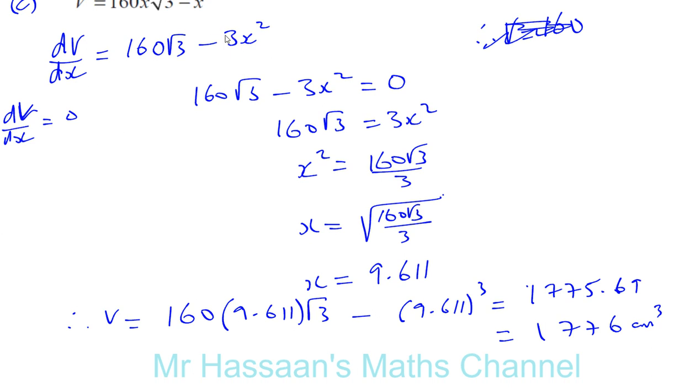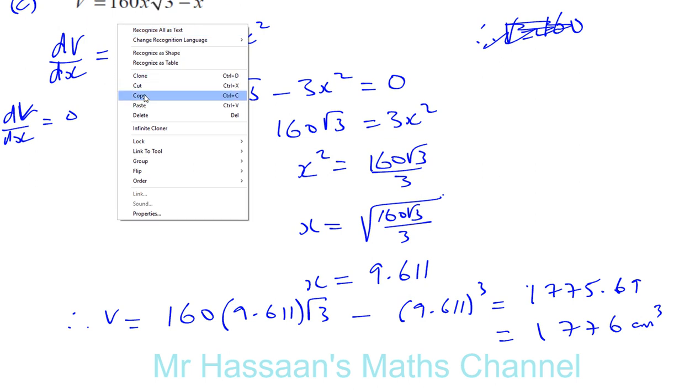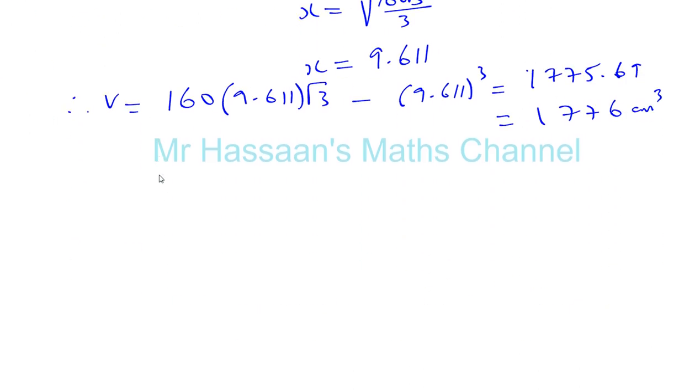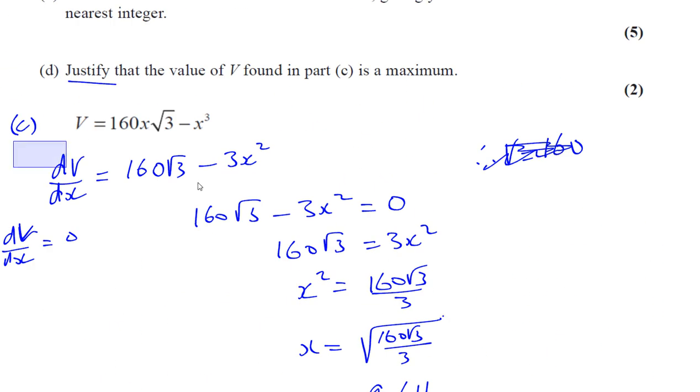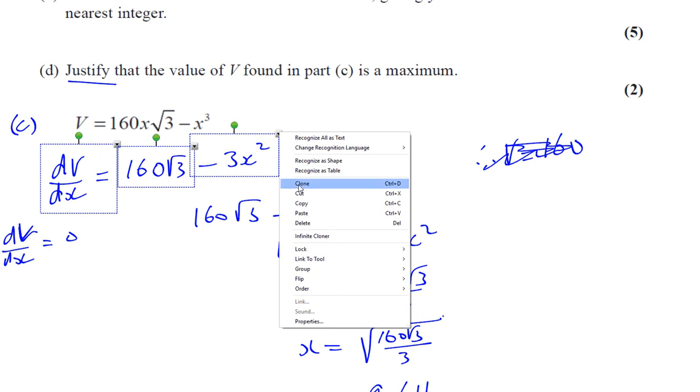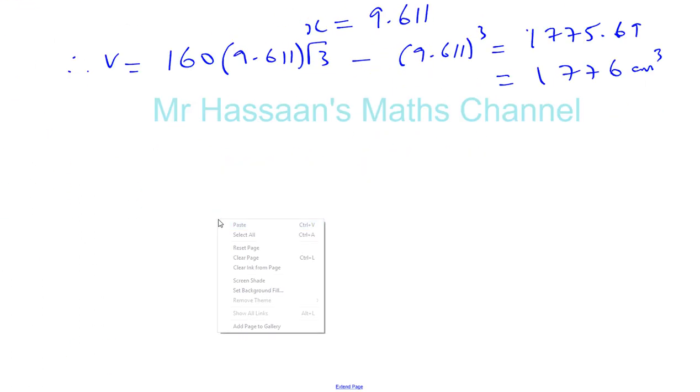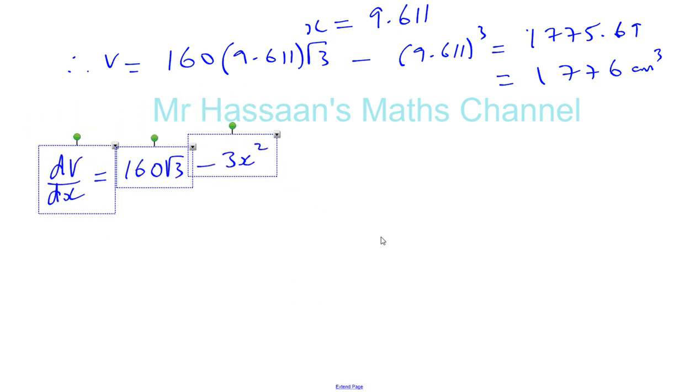Let me take this. Okay, and let's bring it down here. Oops, it's the wrong thing. I didn't copy. So we take our differential that we found earlier. Okay, and we find what's called the second differential of it. Okay, so this is the first differential, and this is the value of X we found. X was 9.611. We want to show that this is a maximum. To do that, we find the second differential, D squared V over D X squared.